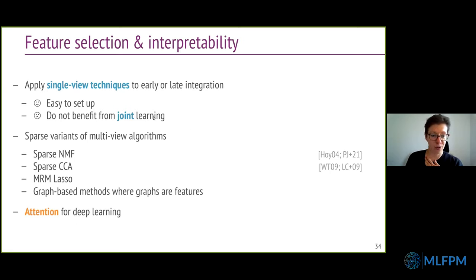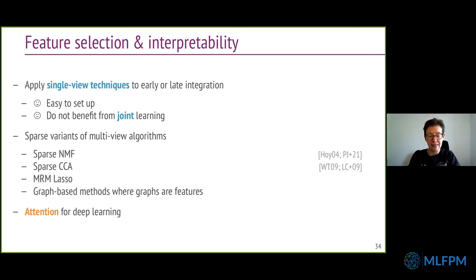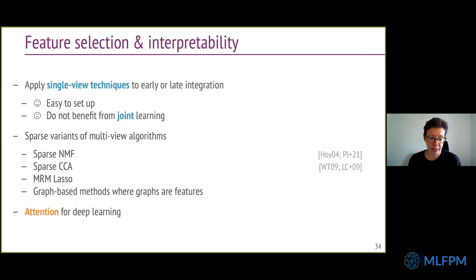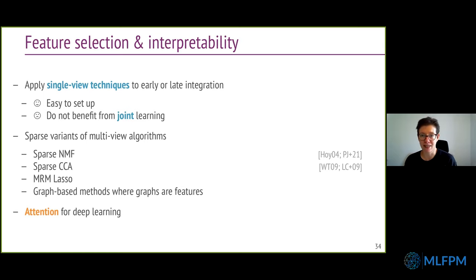For all those approaches, you have the issue that sparsity is achieved with L1 regularization, and L1 regularization is pretty unstable. If you have many correlated features to start with, your L1 regularizer is going to be unstable in the sense that small variations in your input data — like removing one sample — will change the selection.